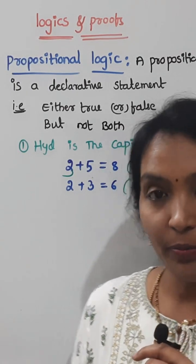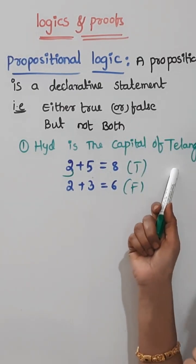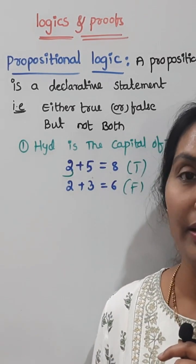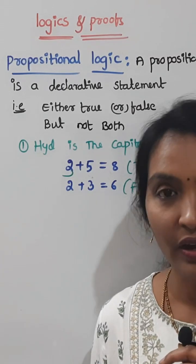This is a declarative proposition and it is true. Suppose Mumbai is the capital of Telangana, that is also a declarative sentence, but it represents a false statement.